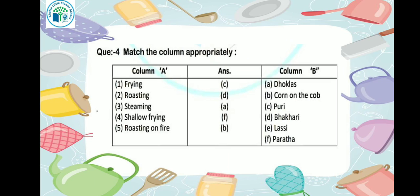Third is steaming — what is made by the steaming method? Yes — dhokla. So our answer here will be option E — dhokla.